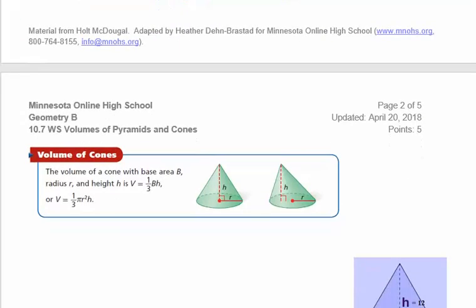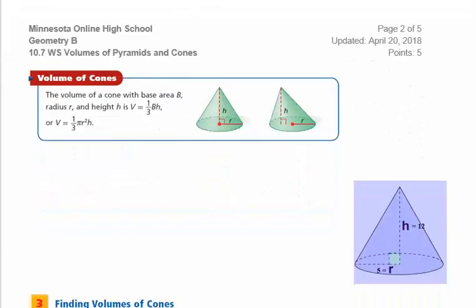Then we talk about volumes of cones. It is the exact same formula, except the area of capital B — the area of the base — will be a circle. So you use the formula one-third times pi r squared times h. The radius goes from the center of the circle to the edge. In the example, the radius is 5 centimeters and the height is 12 centimeters.